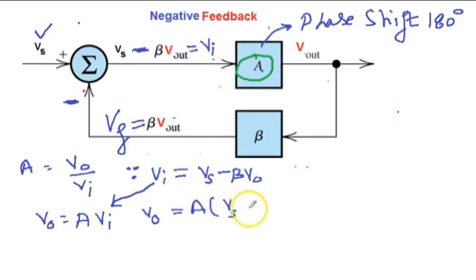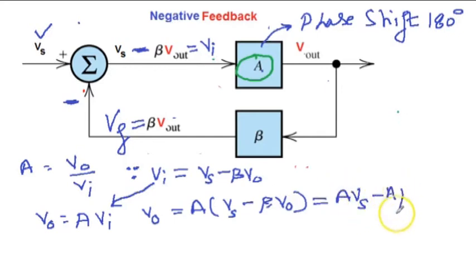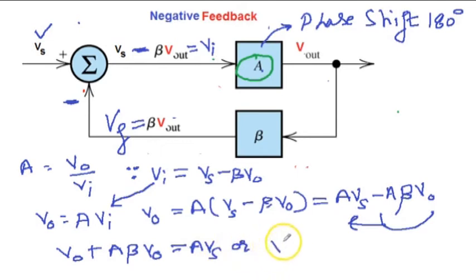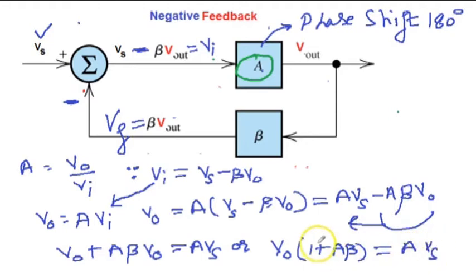Now opening the bracket and moving A beta Vout to the left hand side: V0 plus A beta Vout is equal to A times VS. Taking V0 as common from the left hand side, this becomes (1 plus A beta) times V0 equals A into VS.